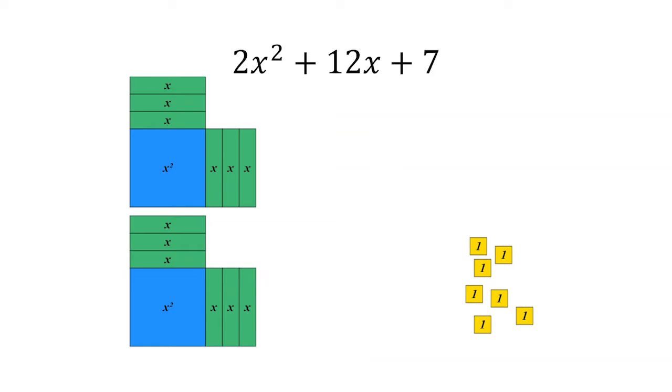Now we look to complete the square using our seven units. Our squares are incomplete. What we need is some more yellow tiles to complete the square without changing the value of our model of 2x squared plus 12x plus 7. The solution is zero pairs.